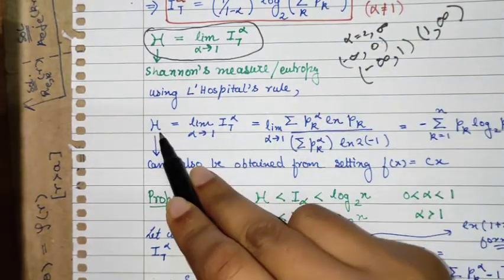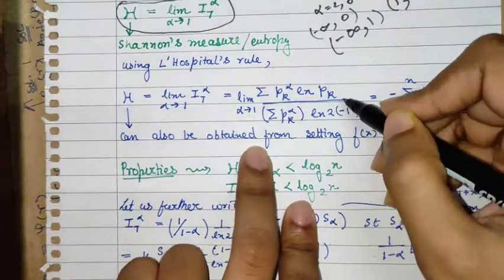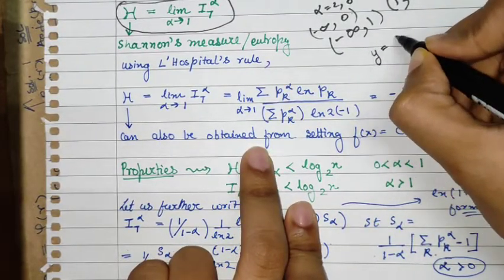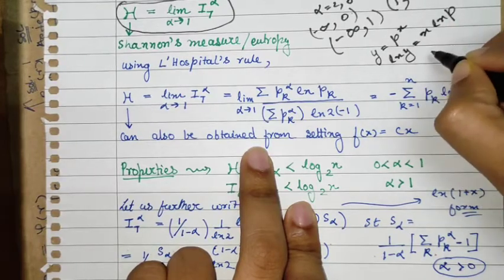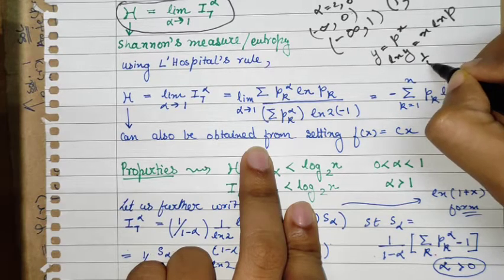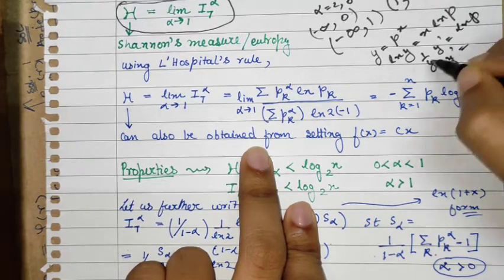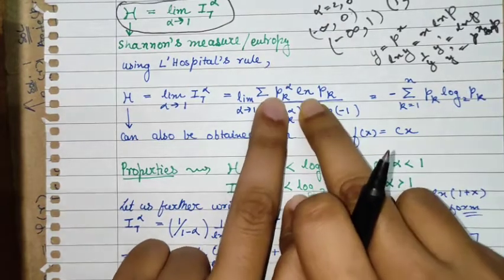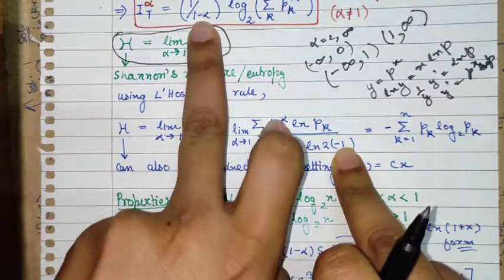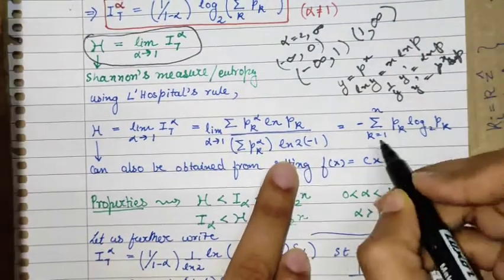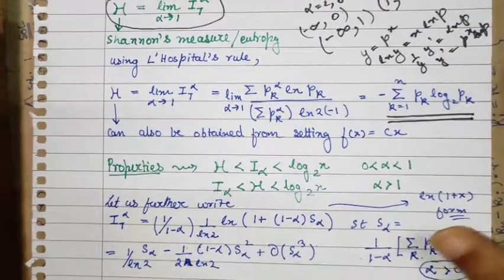Applying L'Hôpital's rule, we differentiate the numerator and denominator with respect to α. For terms of the form y = p^x, we differentiate to get y' = p^x · ln(p). The numerator becomes Σ pᵢ^α · ln(pᵢ) and the denominator differentiates to (1 - α) giving a factor of minus one. This final functional form of the limit is what is known as Shannon's entropy.